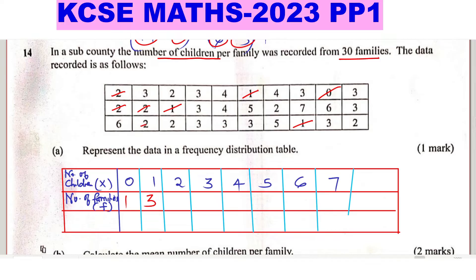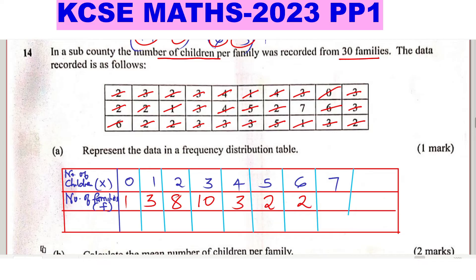Families with three children: counting gives eight. Families with four children: counting gives ten. Families with five children: there are two. Families with six children: there are two. Families with seven children: there is one. That completes the frequency distribution table.